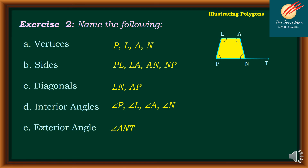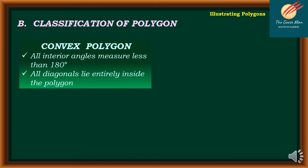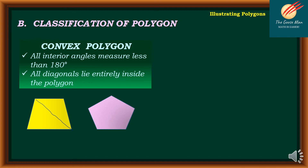Let's move on to the classification of polygons. The first classification is convex polygon — all interior angles measure less than 180 degrees, and all diagonals lie entirely inside the polygon. For example, this quadrilateral — if I draw a diagonal connecting two non-consecutive vertices, it stays inside. Another example is the pentagon — all diagonals lie entirely inside the polygon.